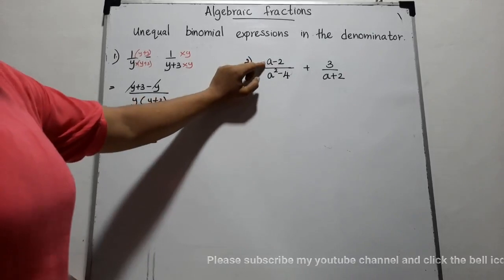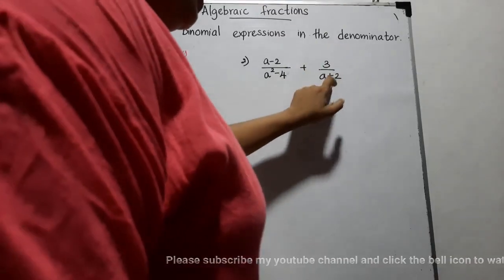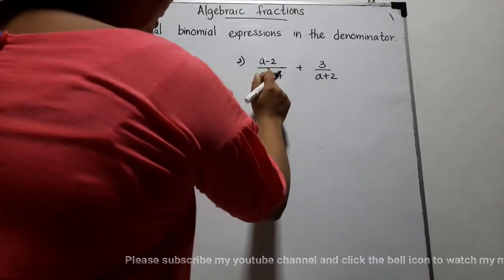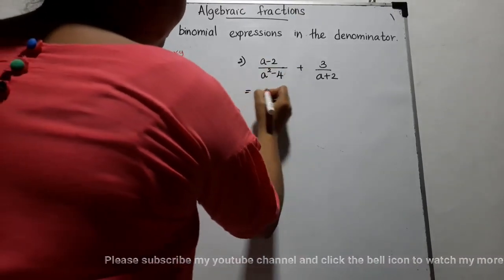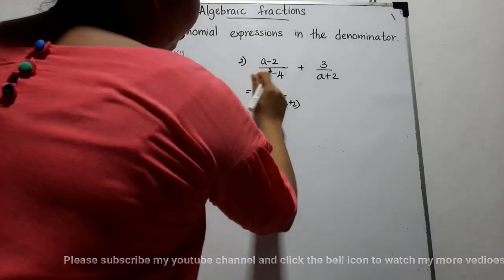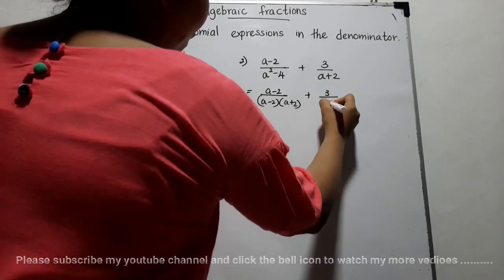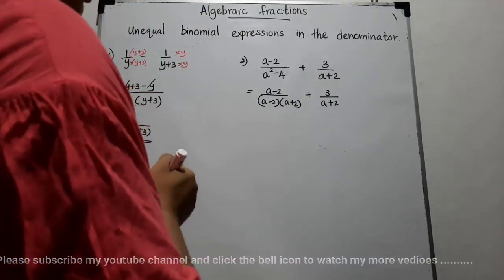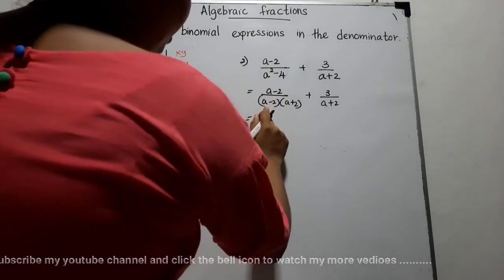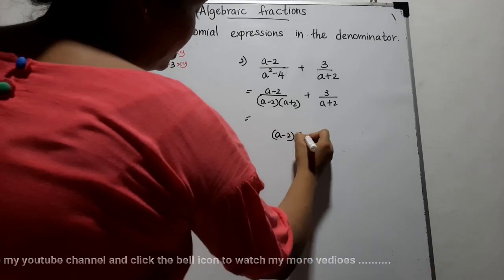Let's see the next example: (A minus 2) over (A squared minus 4), add 3 over (A plus 2). Before finding the LCM, we can factorize A squared minus 4 using the difference of two squares: A squared minus 4 equals (A minus 2)(A plus 2). So we have (A minus 2) over (A minus 2)(A plus 2), plus 3 over (A plus 2). Keep in mind: before finding the LCM, we must factorize. The LCM of (A minus 2)(A plus 2) and (A plus 2) is (A minus 2)(A plus 2).